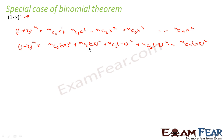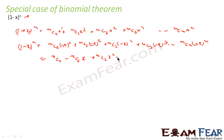Observe that all even powers of (−x) become positive: (−x)^2 = x^2, and all odd powers become negative. So (1 − x)^n = nc0 − nc1·x + nc2·x^2 − nc3·x^3 + ... + (−1)^n · ncn · x^n. The last term (−x)^n is written as (−1)^n · x^n.